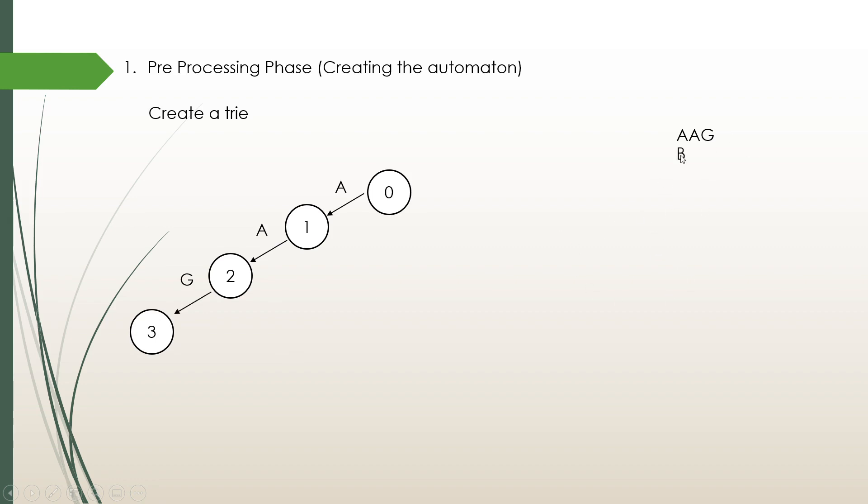Then, after that, we get the second pattern B. So, this is a new pattern B. So we start initiating that pattern from the root node. This is node 3 and this is node 4. The edge is B. After that, we take CAT. So, CAT is a new pattern. We start the constructing of that pattern from the root node. Then, C, the 5th node, A, the 6th node, and T, the 7th node.